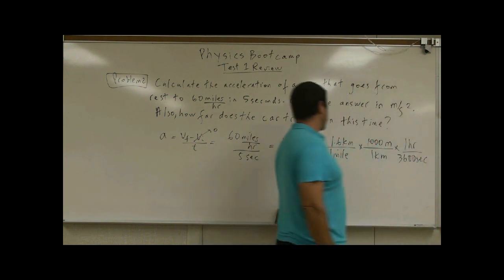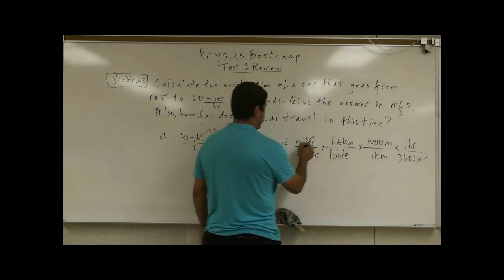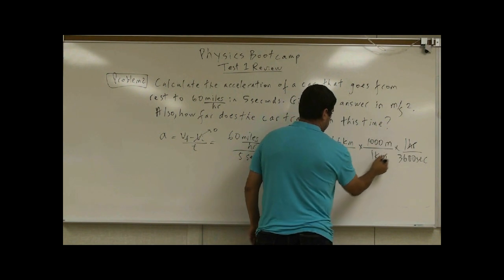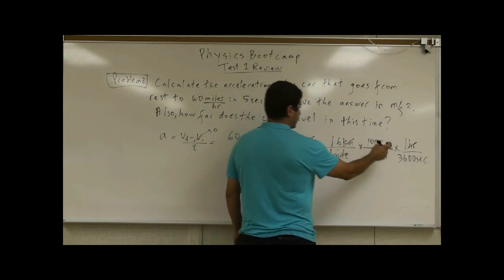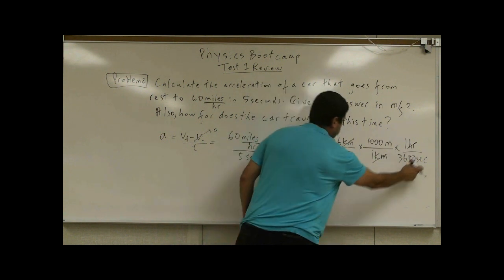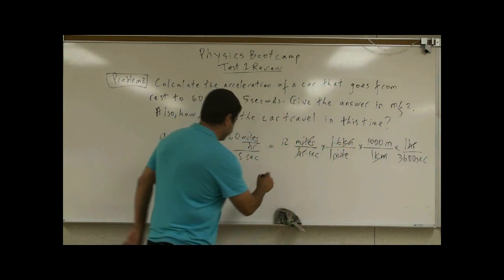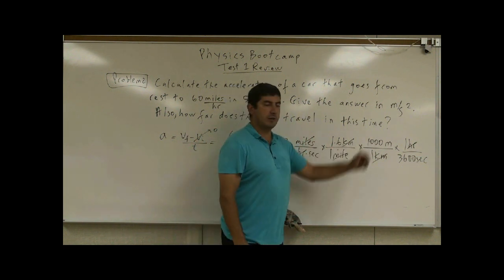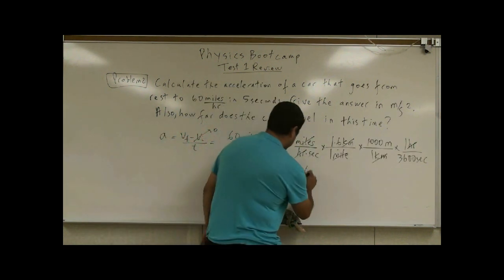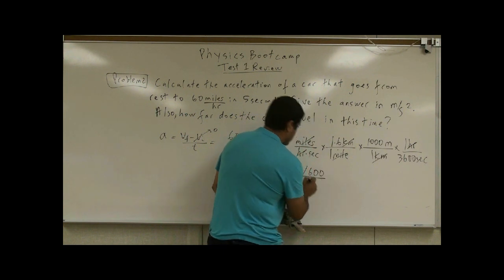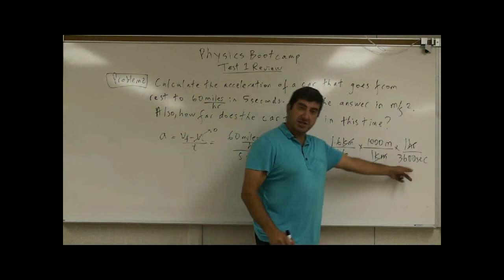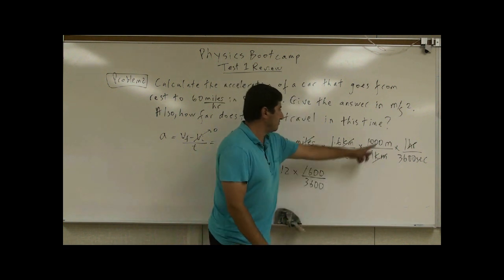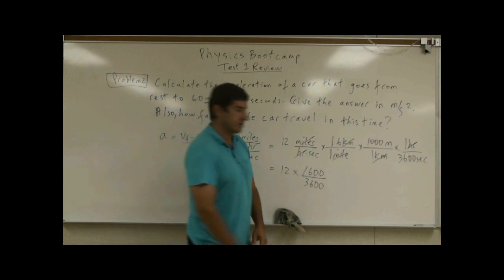So what does that do? That means the mile cancel the mile, the hour cancel the hour, kilometer cancel kilometer. The final unit is meter per second per second. If we simplify this, we get 12 times 1.6 times 1,000 is 1,600 divided by 3,600. And then the units end up meter per second squared.